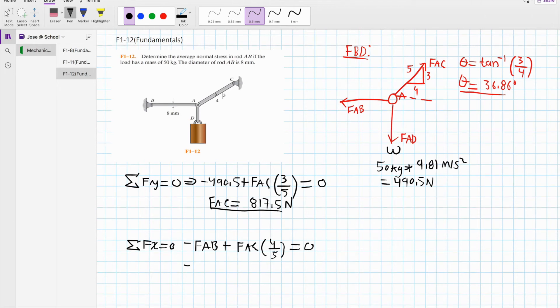So we have negative FAB plus 817.5 times your 4 fifths, equate this to 0, and solve for FAB. FAB equals, punch the numbers in the calculator, and we get 654 newtons.